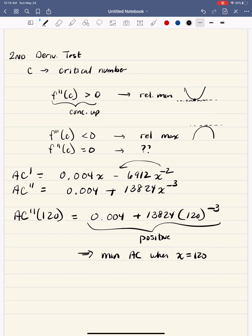So then one question we could answer is, what is the average cost? We know it's minimized at that production level. What is it? Well, we could just simply substitute 120 in for the average cost function,